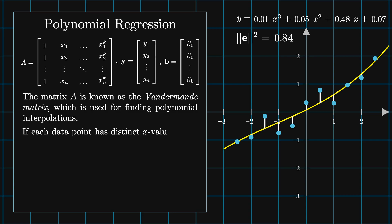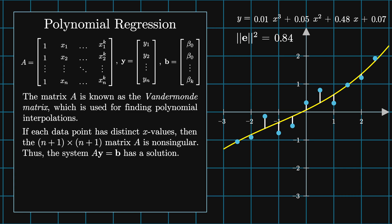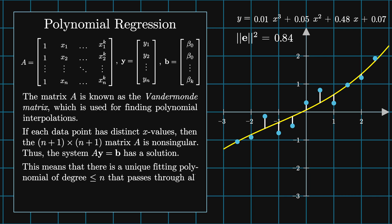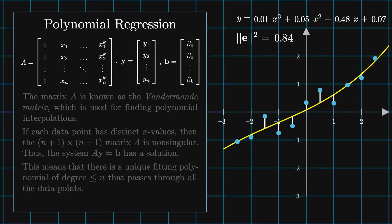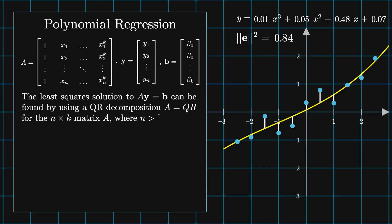If each data point has distinct x values, then the (n+1)-by-(n+1) Vandermonde matrix, which comes from a degree-n polynomial, is non-singular and the system Ay equals b has a solution. This means there is a unique fitting polynomial of degree less than or equal to n that passes through all of the data points. This is the linear algebra explanation of why n data points prescribe a degree-n polynomial. If the number of points n and the degree of the polynomial k are not equal and n is greater than k, then we are looking to find a least squares solution.